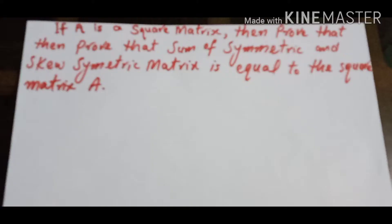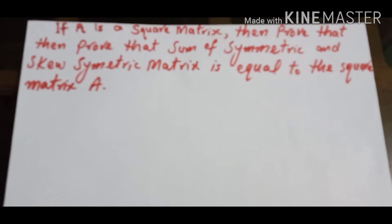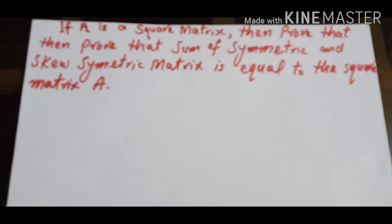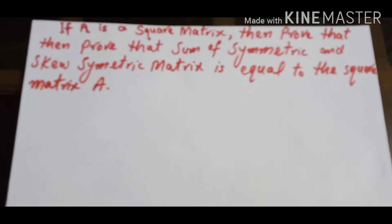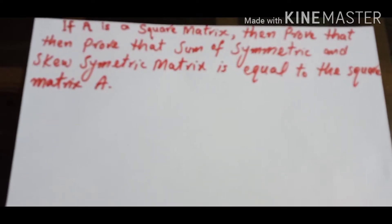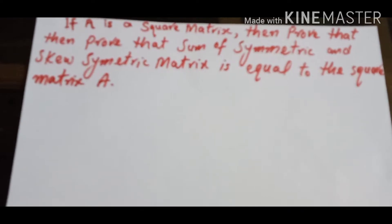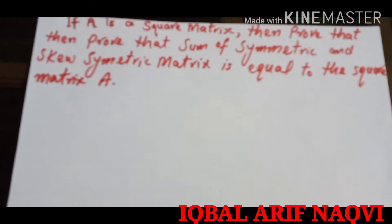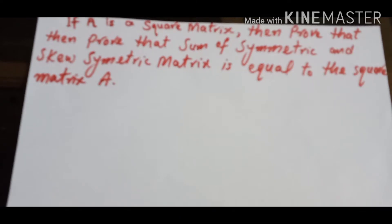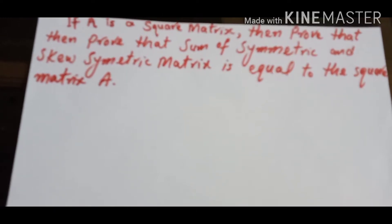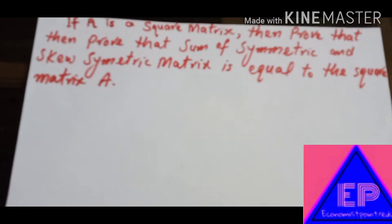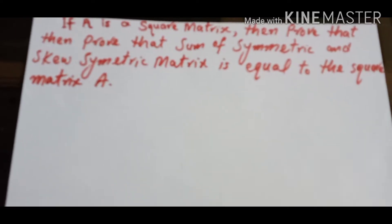Bismillahirrahmanirrahim, Wassalamualaikum dear students. Today we are going to prove that if A is a square matrix — 2×2, 3×3, or 4×4 — then the sum of a symmetric matrix and a skew-symmetric matrix is equal to the square matrix A. This is a small proof but it is a little bit tricky.